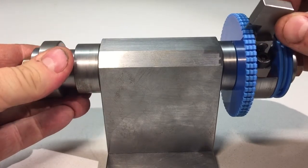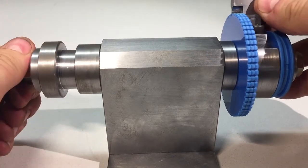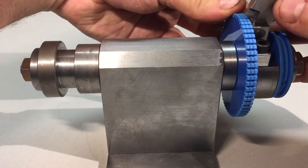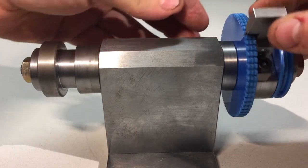I set up a dial test indicator against the gear blank to check if it's in line with the axis. Just watch.